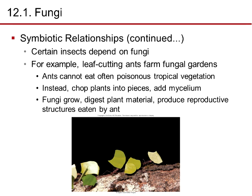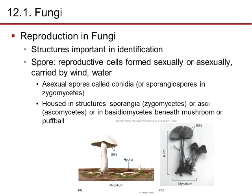Certain insects also depend on fungi. For instance, leaf-cutting ants farm fungal gardens — ants cannot eat often-poisonous tropical vegetation, so instead they chop the plants into pieces, add the mycelium, the fungus grows and digests the plant material, producing reproductive structures that are then eaten by the ant. The ant uses leaves it can't eat as a growth medium to cultivate the fungi.